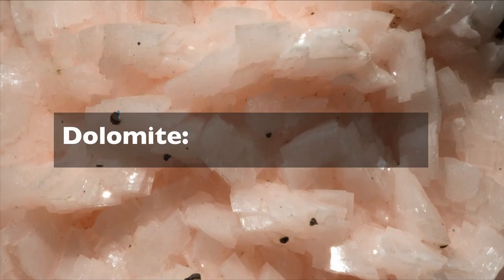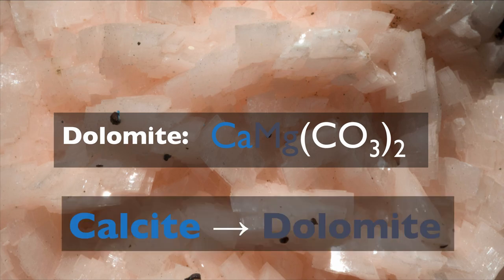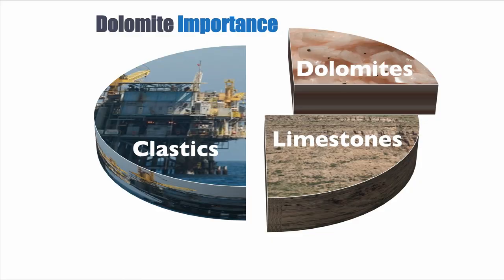Another important process that happens in the marine environment is dolomitization. Dolomite is a magnesium calcium carbonate — one calcium ion, one magnesium ion, and two carbonate ions. This mineral is essentially mostly resulting from the transformation of calcite into dolomite. Dolomites are important because about half of sediments are carbonates, and dolomites form half of those carbonates. The problem is we don't fully understand how dolomites are created at low temperature because we don't understand the kinetics of dolomitization.